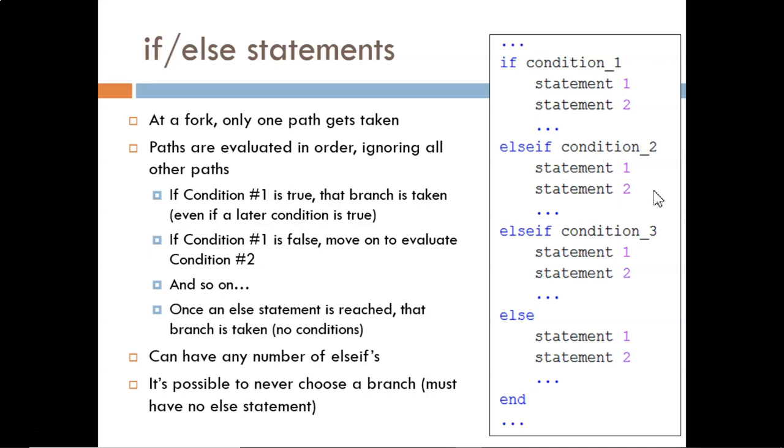How does MATLAB choose one path over another? By evaluating the conditions that follow the if and else-ifs, but it evaluates these in order from top to bottom. If condition one is true, then the first branch is taken without ever looking at the remaining conditions. If condition one is false, then condition two is checked, and so on. Is there a condition paired with the else? No, there is not. There never is, so don't put a condition there. If an else statement is ever reached, we are guaranteed to go down that path.